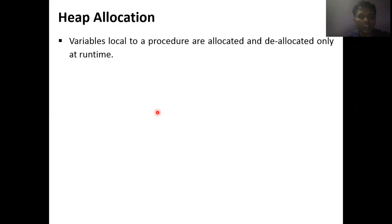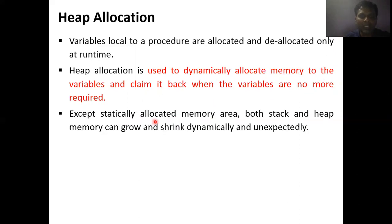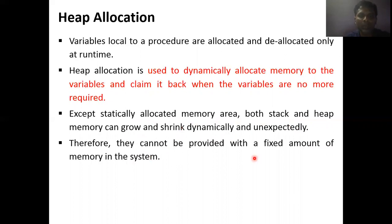Heap allocation is used whenever we want to allocate memory at runtime. In C, for this purpose we use pointers, and based on malloc and free functions we perform heap allocation. Variables local to a procedure are allocated and de-allocated only at runtime. Heap allocation is used to dynamically allocate memory to variables and reclaim it when the variables are no longer required. Both stack and heap memory can grow and shrink dynamically and unexpectedly at runtime, and therefore cannot be provided with a fixed amount of memory in the system.